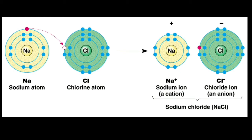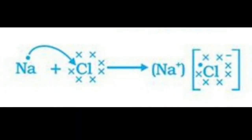We will take an example of sodium and chlorine again. The electronic configuration of sodium is 2,8,1 and the atomic number of chlorine is 17, so its configuration is 2,8,7. Chlorine can gain one electron and sodium can easily lose one electron. You can see the Lewis dot structure on the screen.